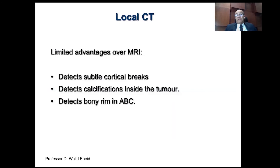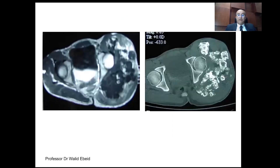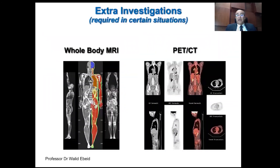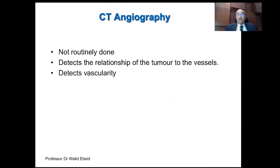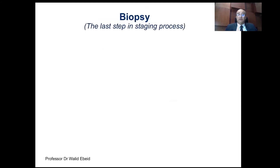CT is not of value in local assessment of the tumor like MRI. It just has an edge when there is a pathological fracture or when there is calcification in the tumor, but MRI is by far more superior. CT may be of value in assessing cartilaginous tumors, such as a chondrosarcoma of the proximal femur. Other extra investigations that could be used in staging are whole body MRI and PET-CT, which can help in assessment of the whole body, but they are not routinely used. CT angiography also is not routinely done but is useful in detecting the relationship of the tumor to major vessels.